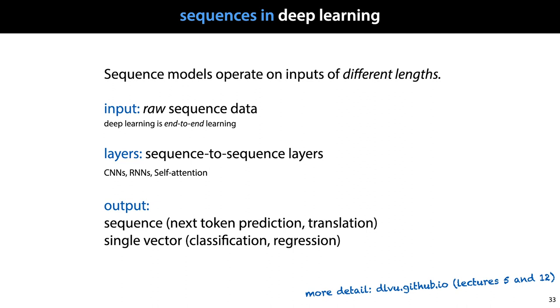We'll feed the model with raw data with no feature extraction, so that we don't lose any information. We'll then define something called a sequence-to-sequence layer, which will form the basic structure of our model, and then finally we'll look at how to produce output.